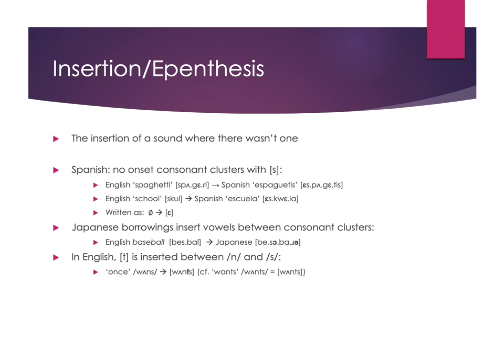English also does insertion, especially in quick speech. A T is often inserted between an N and an S sound, because when moving from the alveolar nasal to the alveolar fricative, we often close the velum before stopping the nasal, producing a stop in between. Said slowly, 'once' may not have the T, but in quick speech 'once' gains that T. We can write a rule: null becomes T in the environment after N and before S.